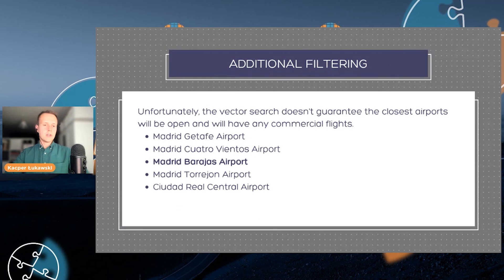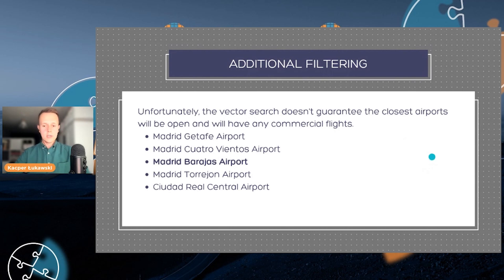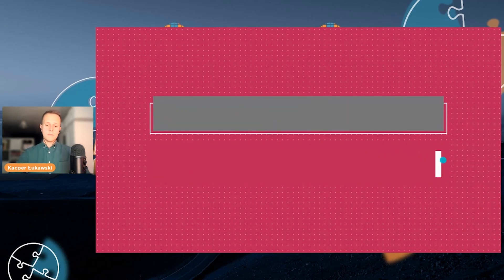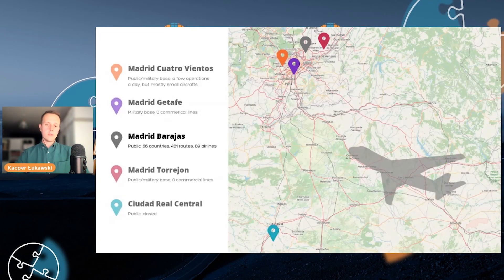Of course, there are also some other criteria that typically need to be fulfilled. In the case of our airports, it turns out that only one of the closest ones is really open — the others are military airports or airports closed for ages. So there are additional criteria we would like to apply for the vector search. That is completely doable: there is a way to incorporate faceted search directly into the HNSW search algorithm. As a result, we are able to select not only the closest airport but the closest open airport specifically.